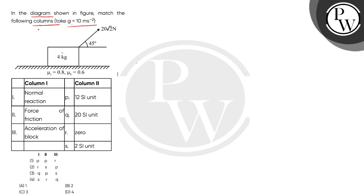Given we have a block with mass of 4 kg and a force of 20 square root 2 newton at an angle of 45 degrees with the horizontal. The coefficient of static friction is 0.8 and kinetic friction is 0.6.